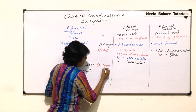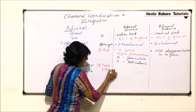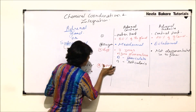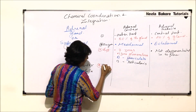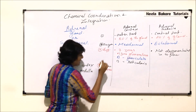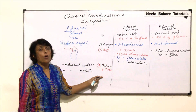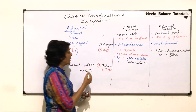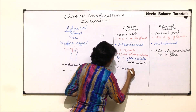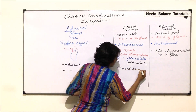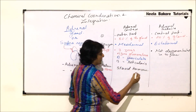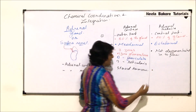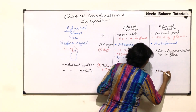The fourth comparison is the nature of hormones. The hormones produced by the adrenal cortex are steroid hormones, whereas the hormones produced by the adrenal medulla are amine hormones.